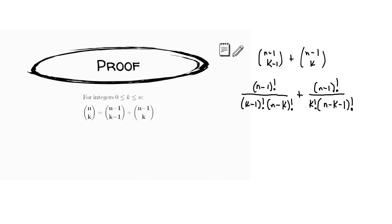My next step is to get a common denominator. The denominators are complicated but more similar than you realize. The fraction on the right has K factorial while the fraction on the left has K minus 1 factorial. So if I multiply the left fraction by K over K, I get K times K minus 1 factorial in the denominator, which is K factorial. Meanwhile, the left fraction has N minus K factorial while the right has N minus K minus 1 factorial, so multiplying the right fraction by N minus K over N minus K gives a common denominator.